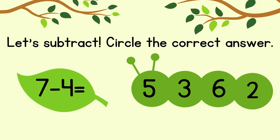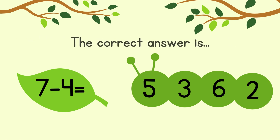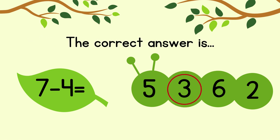Circle the correct answer. 7 minus 4 equals. The correct answer is 3.